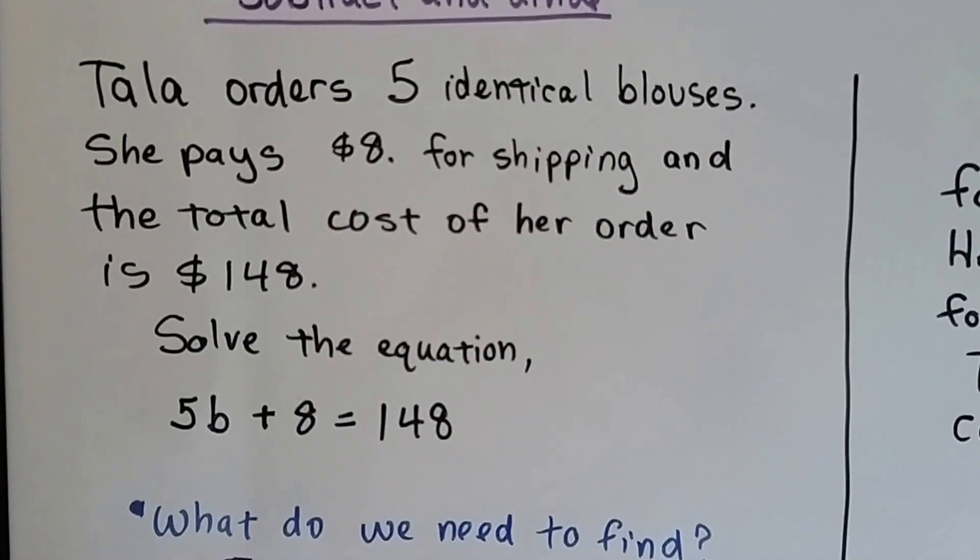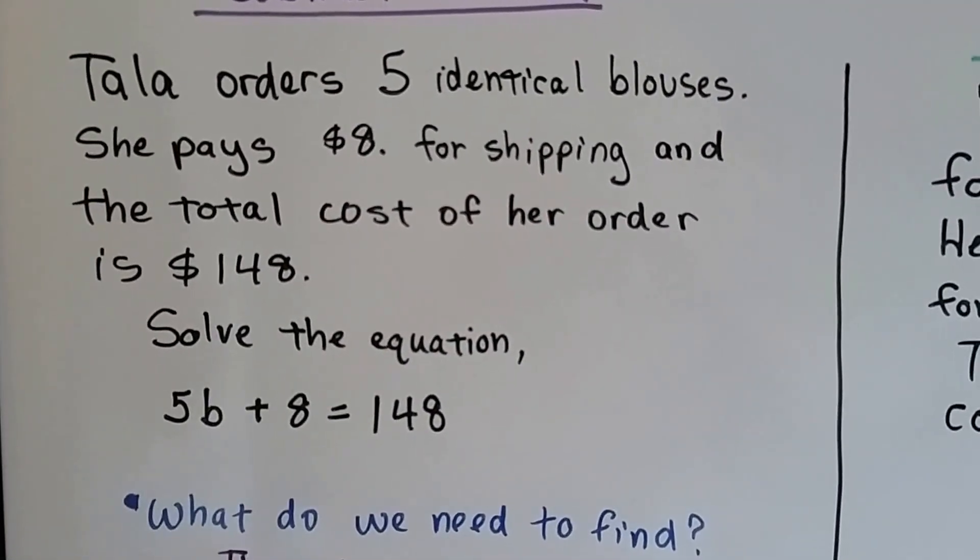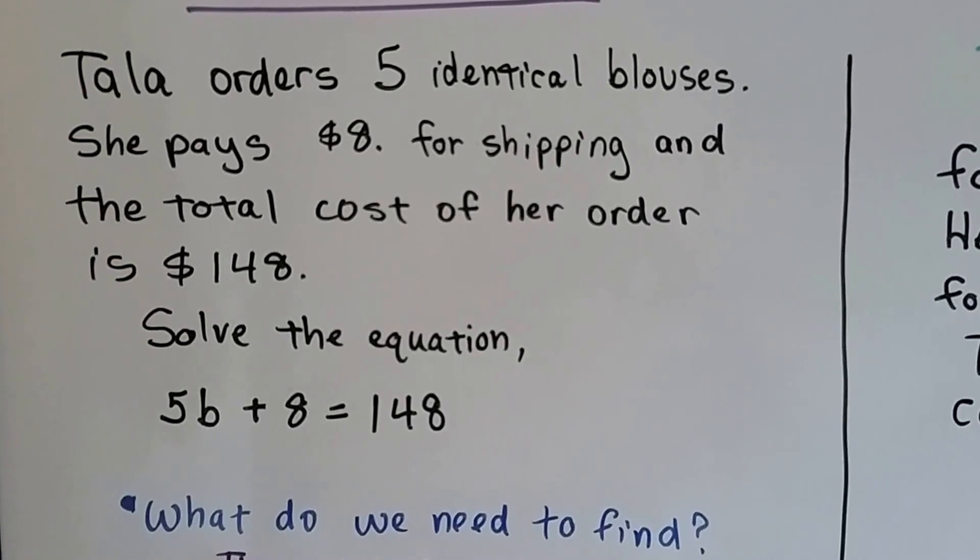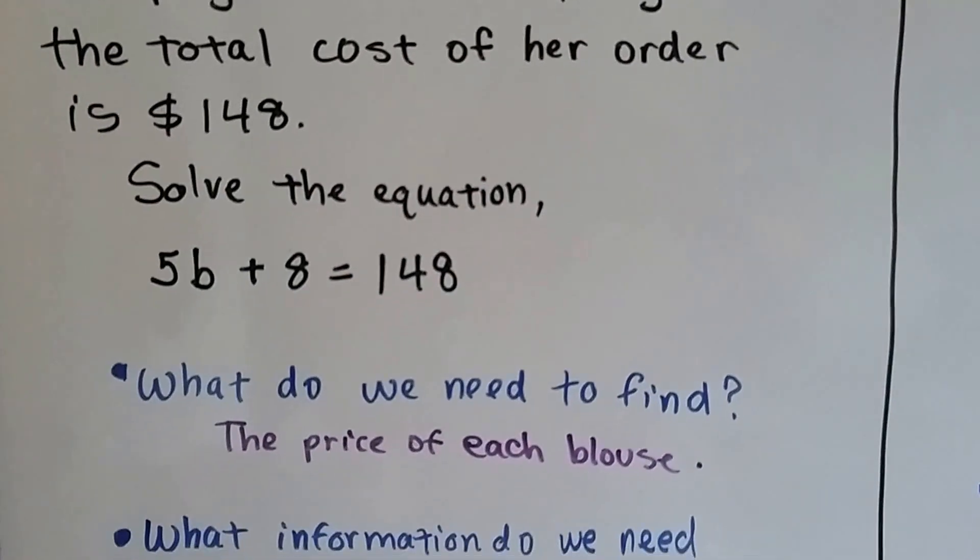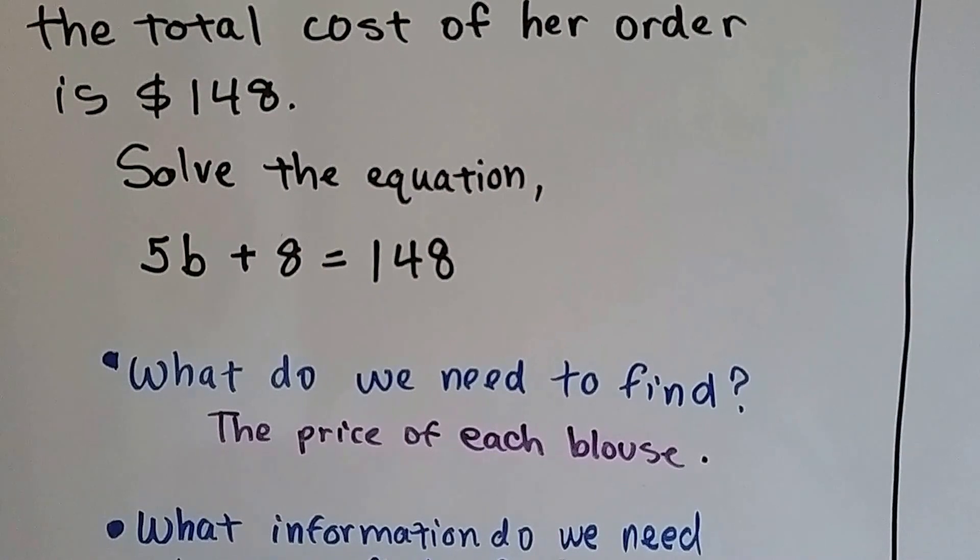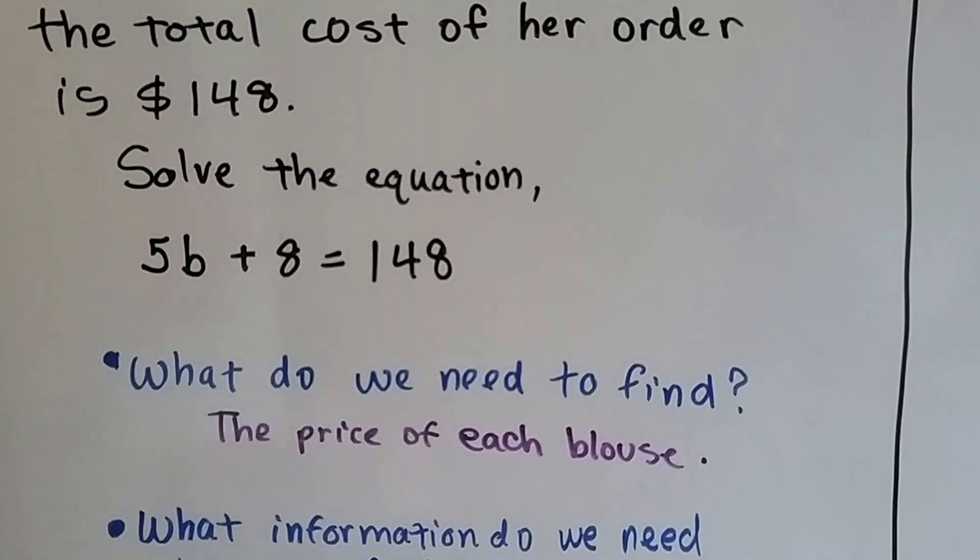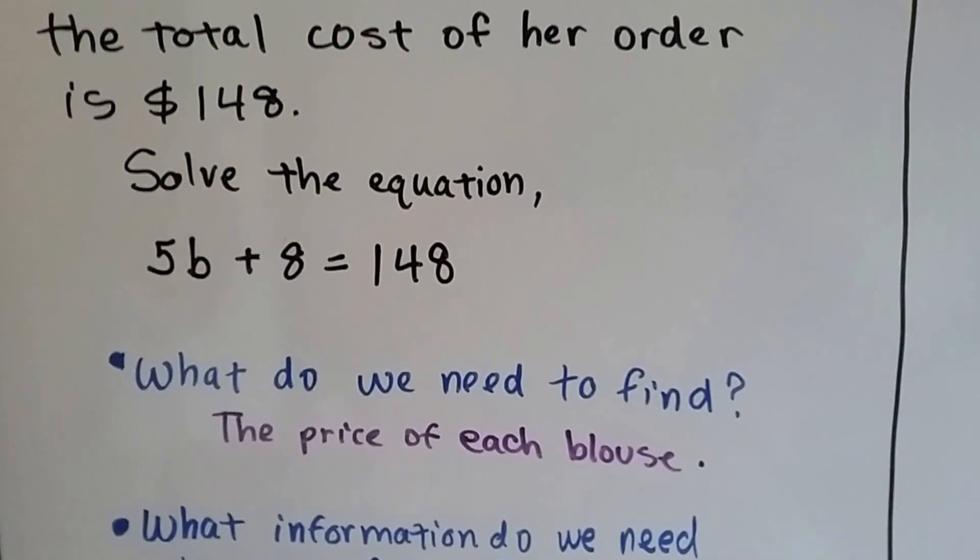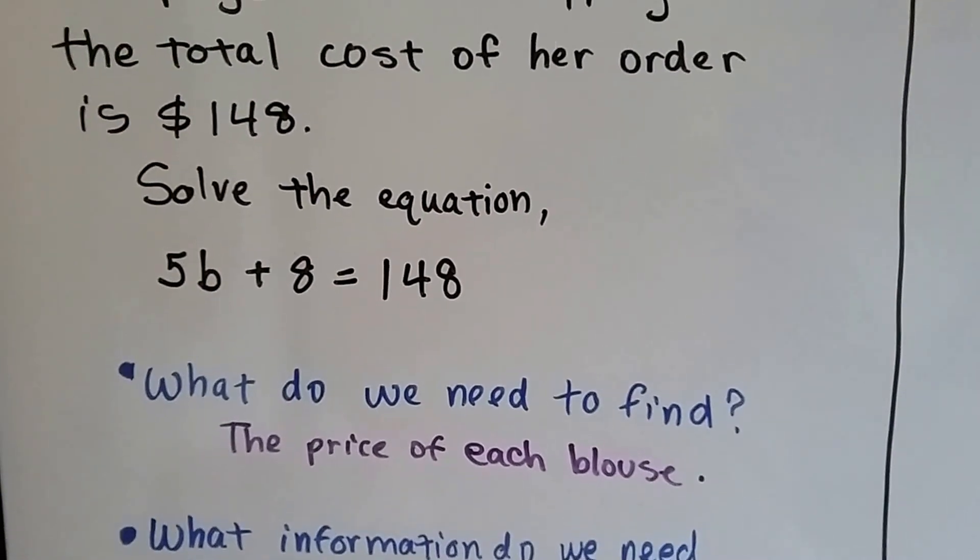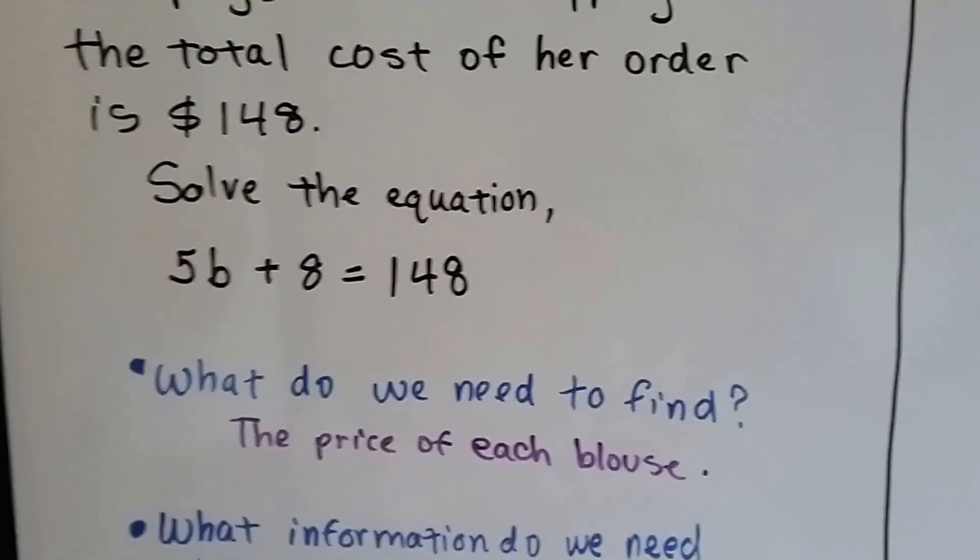Tala orders 5 identical blouses online, she pays $8 for shipping, and the total cost of her order is $148. So solve the equation 5B plus 8 equals $148. She's got 5 blouses plus $8 in shipping, and the total was $148.